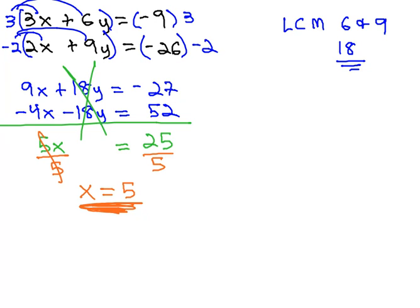We still need to find the y value, and so we will go back to one of the original equations, and replace the x with 5, and then solve for the y. We can use either equation. I always like to use the one with smaller numbers. This would be the first equation.